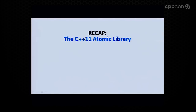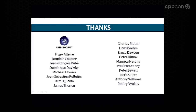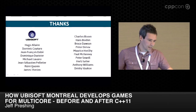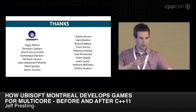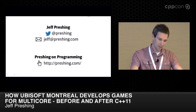Key takeaways for part two: C++11 forbids data races — you now know what that means. It's effectively two atomic libraries — look at it that way. And if you want to pass non-atomic information between threads, make sure you've got a synchronizes-with relationship somewhere — very fundamental, very important. Thanks to the colleagues I worked with who implemented the things shown in part one, and to the people online whose articles, talks, and email exchanges I encountered. Any errors are entirely my own. You can find me on Twitter at Preshing, email me at jeff@preshing.com, or check out my blog, Preshing on Programming.